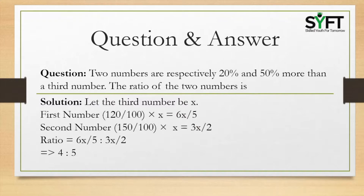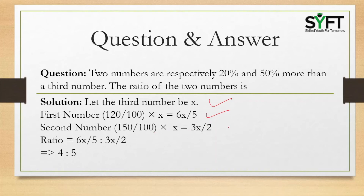Next question: Two numbers are respectively 20% and 50% more than the third number. Find the ratio of the two numbers. Solution: Let the third number be x. The first number equals 120 by 100 into x, that is 6x by 5. The second number equals 150 by 100 into x, that is 3x by 2. Hence the ratio is 6x by 5 is to 3x by 2, which simplifies to 4 is to 5.